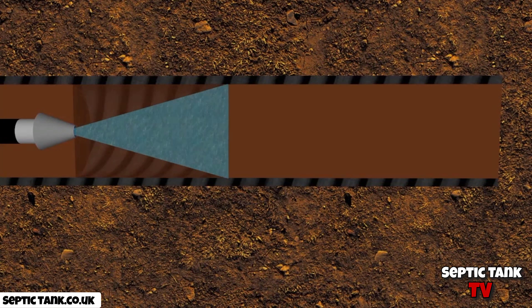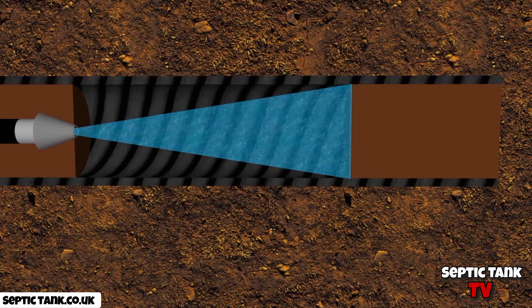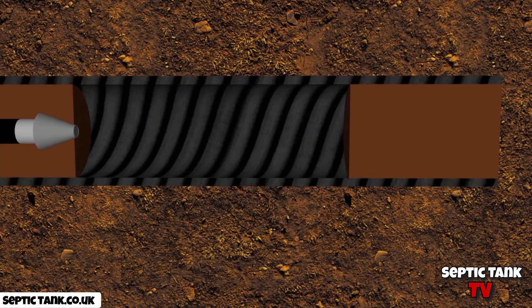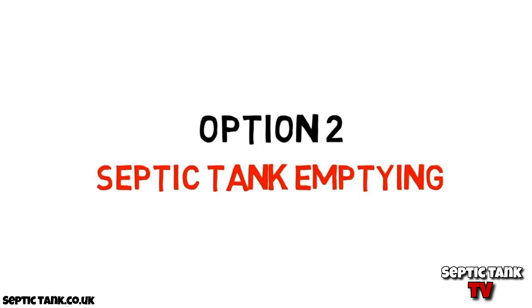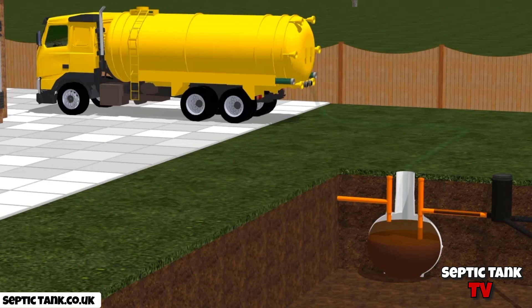The other popular method is jetting. Many septic tank emptying firms have jetting equipment on their lorries and offer to blast high-powered water into the soak away to try and unblock the pipes. Again, this sounds like a good idea, but in reality it does more harm than good. Because soak away pipes are surrounded by soil, when high-powered water is blasted into them, the fat, grease, and sludge just get compressed, making the original problem even worse.